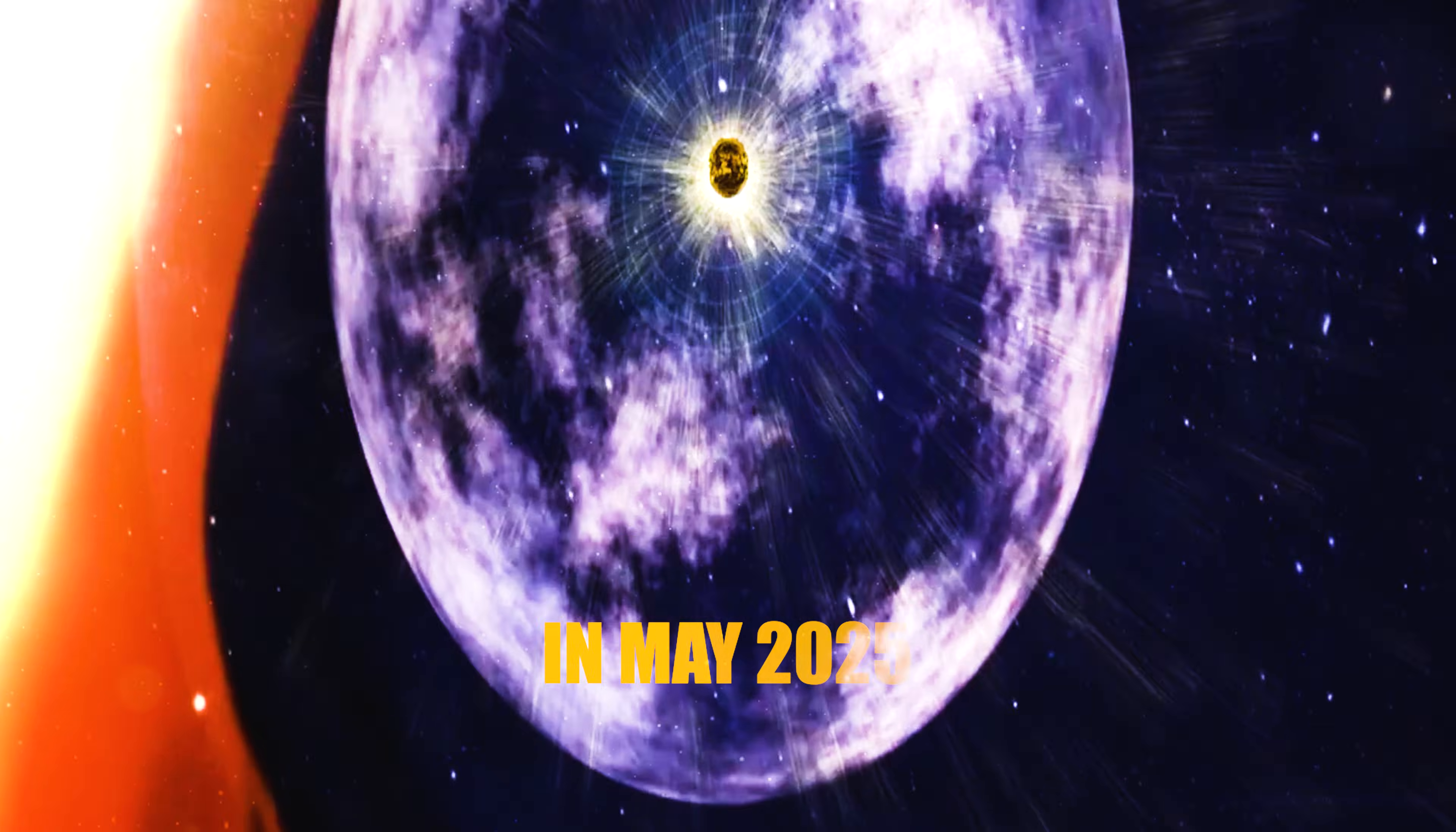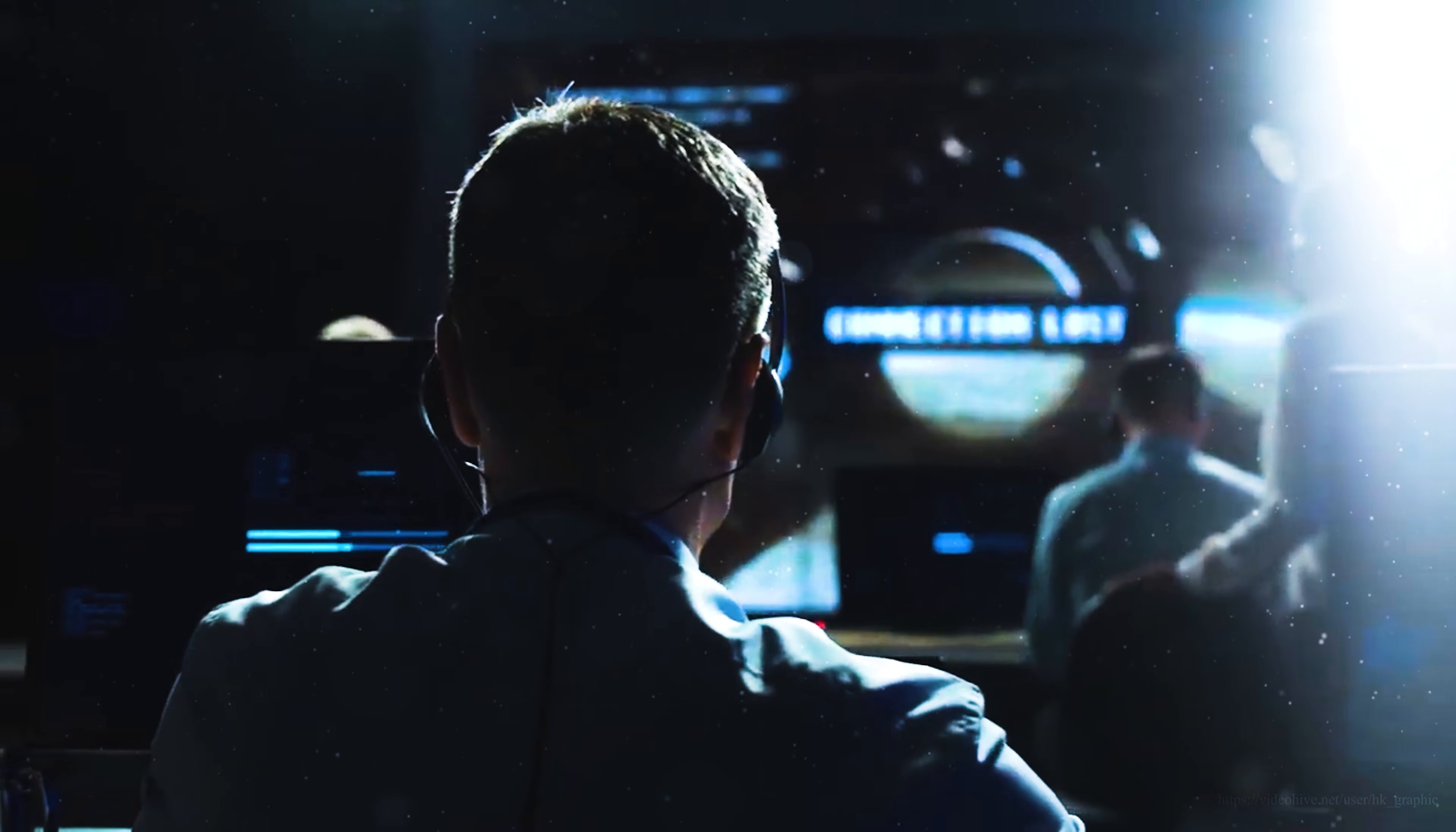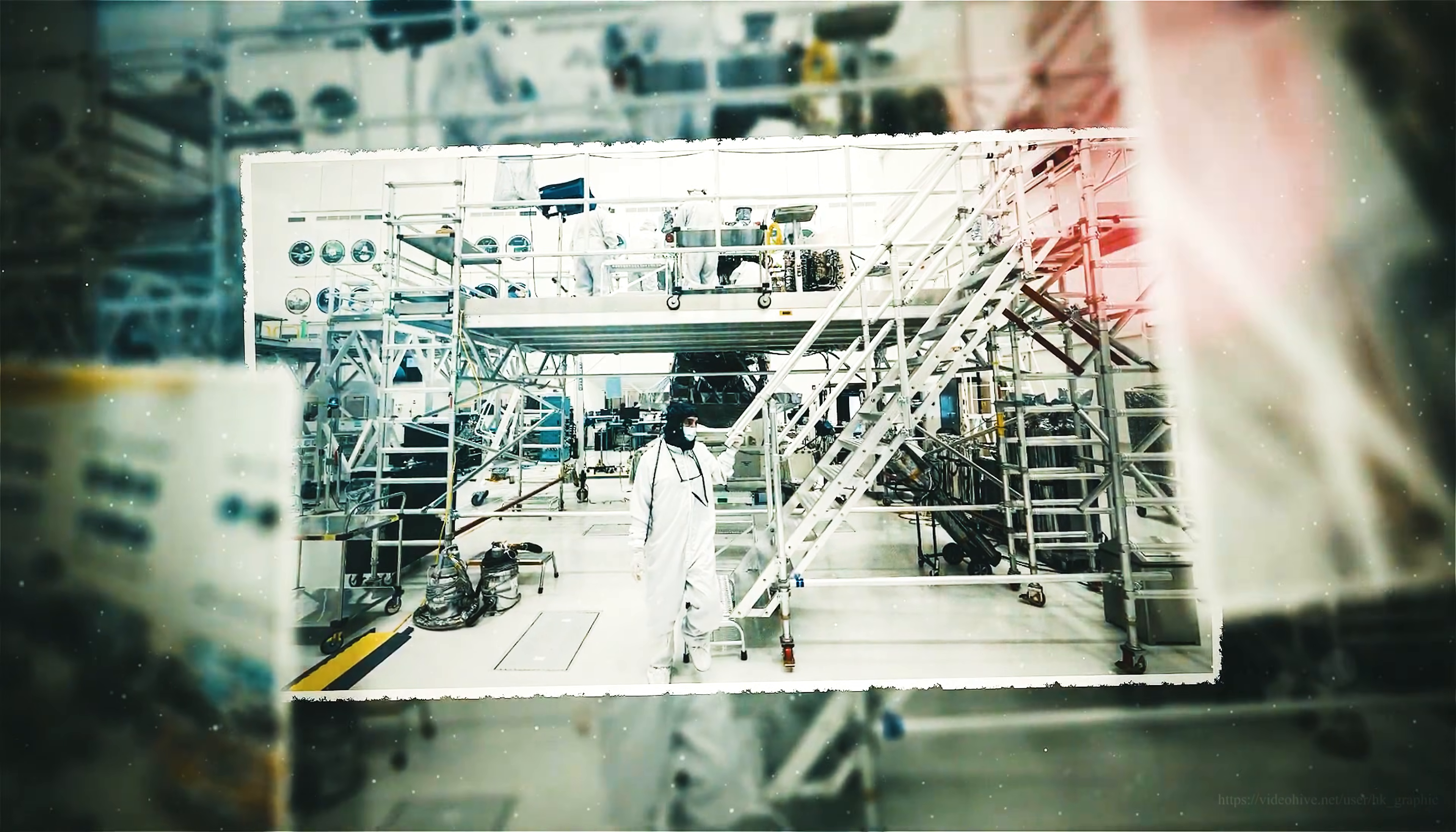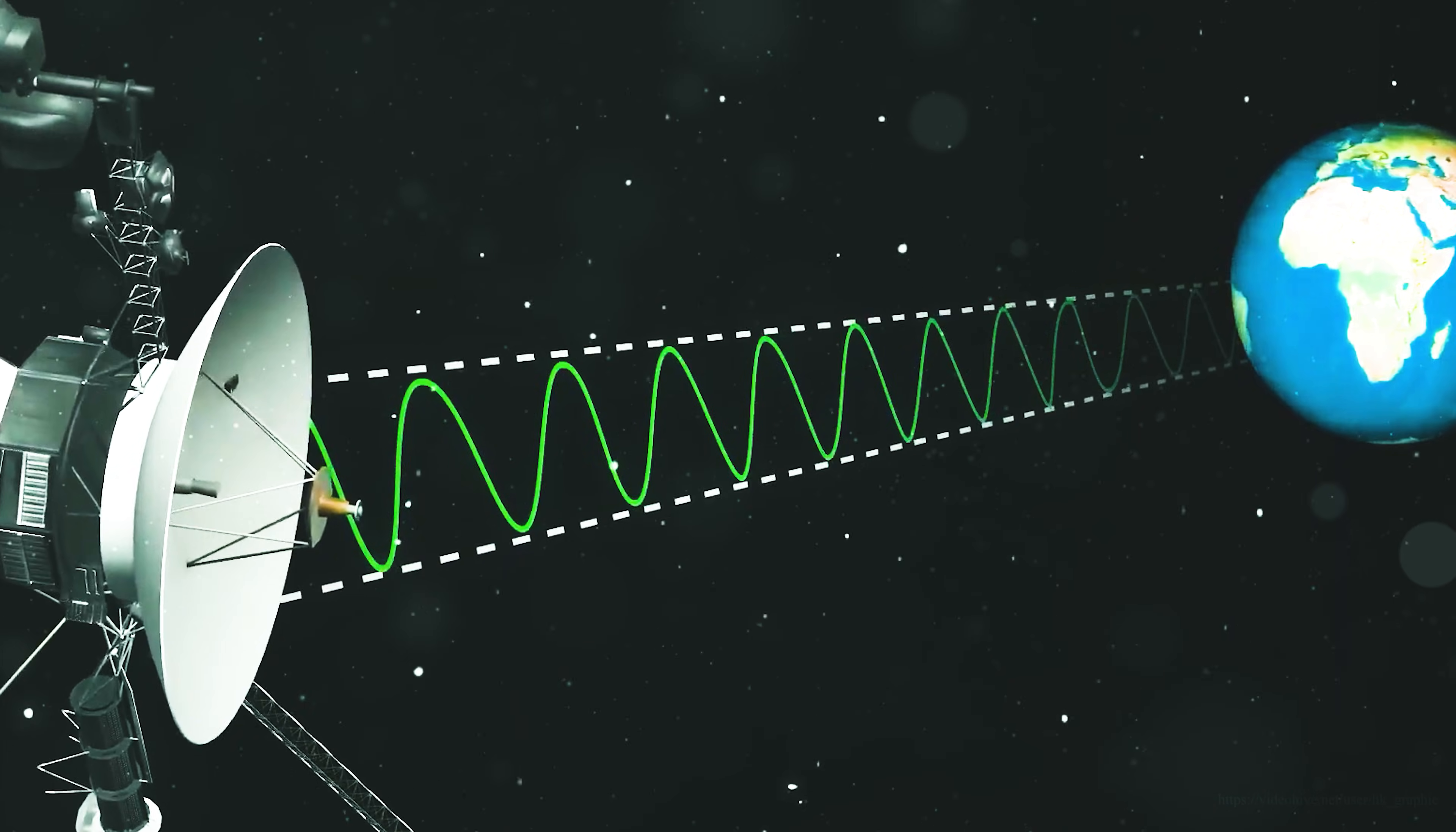In May 2025, NASA revived Voyager 1's primary roll thrusters, silent since 2004, by rewiring decades-old power circuits to prevent a fuel line rupture. In April 2025, engineers successfully rewrote memory pathways on an aging computer chip suffering radiation damage, a repair never attempted before.